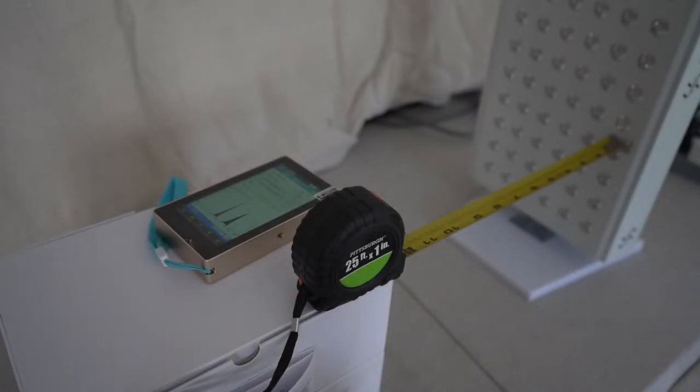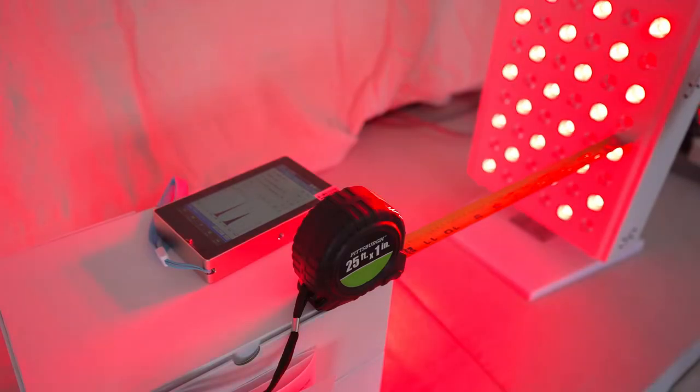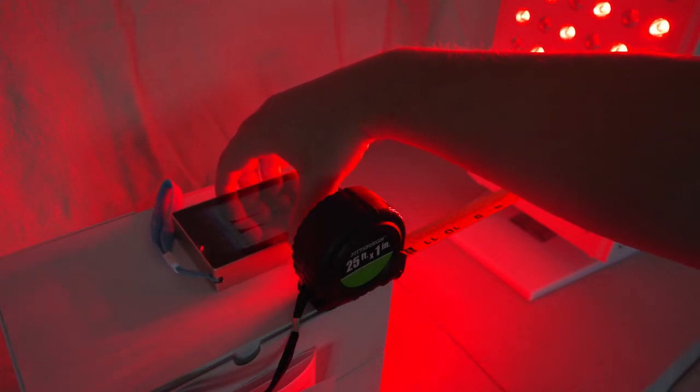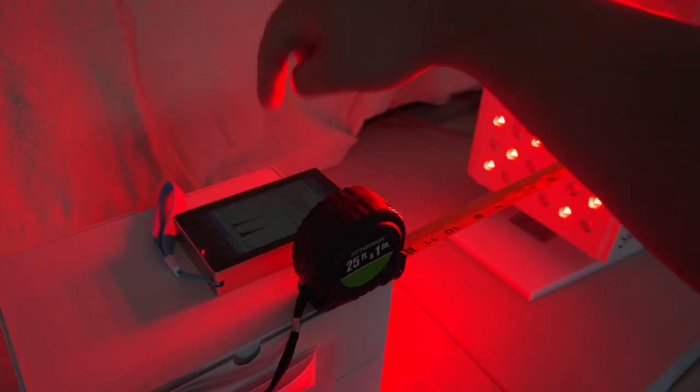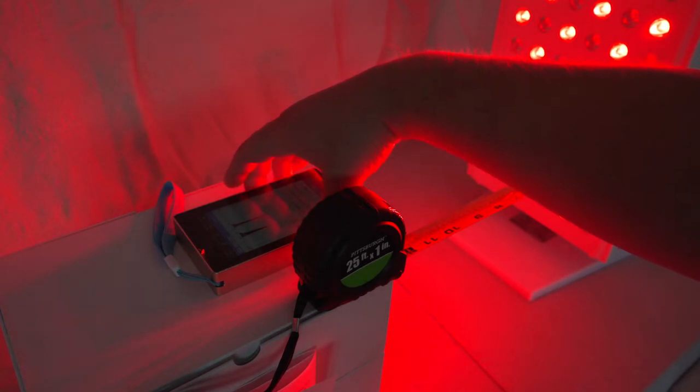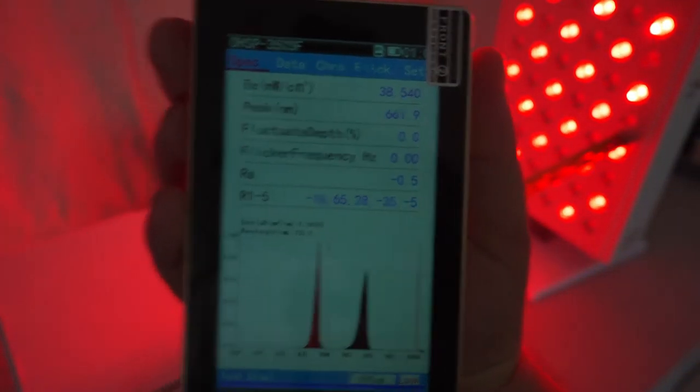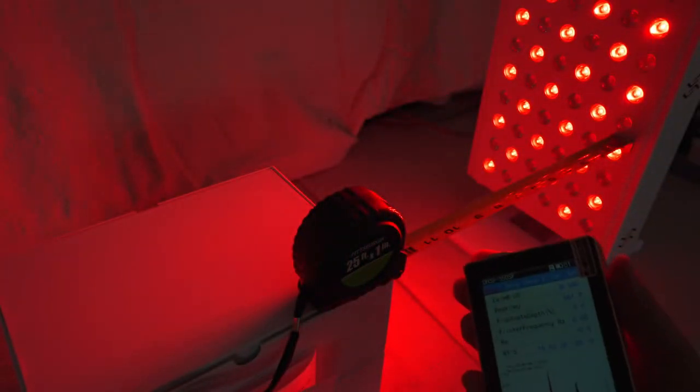So we'll test it out on the escrow max pro. So we'll turn it on. I've got it set to 12 inches away. We'll take a measurement with the hobo color. I'll do it a couple times. And it's telling us 38 milliwatts per centimeter squared. Again, that's about 12 inches away.